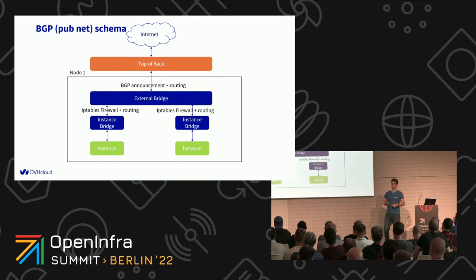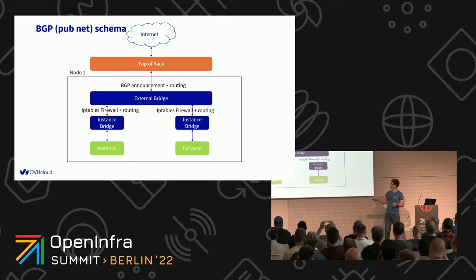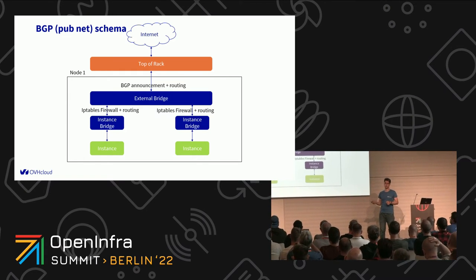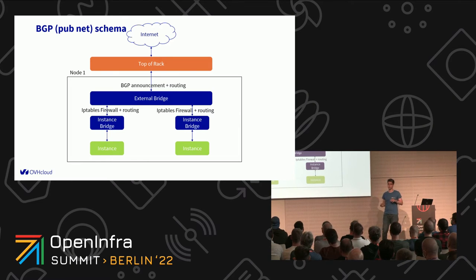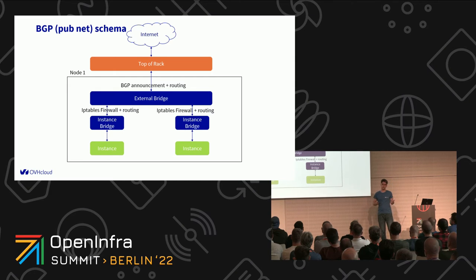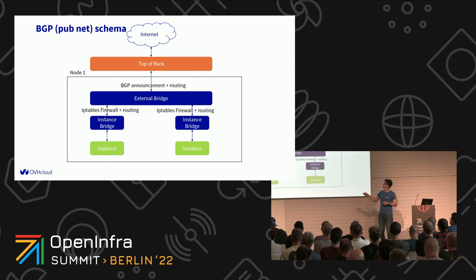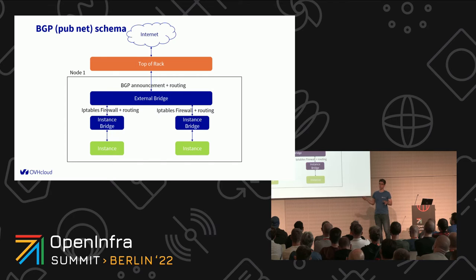So that's what we designed. For public networking, which we called BGP network, for each instance that our client starts, we also plug an instance bridge — one bridge per each instance. All of these instance bridges are connected to one external bridge, but between them we have a network namespace. In this namespace, we have IP tables-based firewalling, routing to that particular instance, and also DHCP to serve the IPs for that instance. Then all instances are connected to the external bridge, and all the IPs are announced to the top-of-rack, with routing to every instance lying on the host.